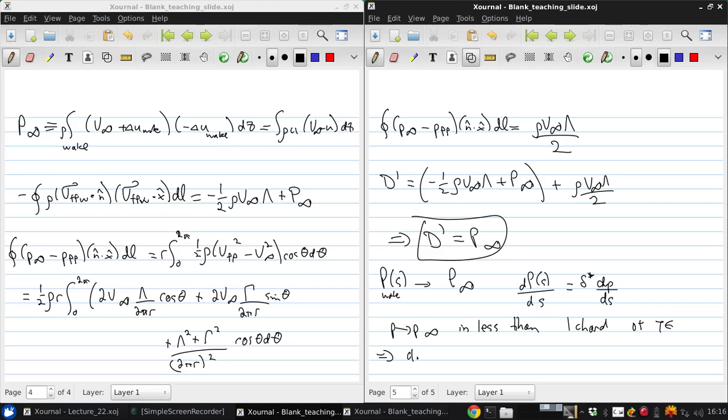So then that means that dp ds is zero once p is p infinity, and then P must be P infinity no matter how delta star is changing. So it doesn't matter how much the wake is spreading out and delta star is getting larger. Once dp ds is zero because the pressure is no longer changing, there's no more mechanism to change the momentum defect and it's reached the far field value giving the drag for the airfoil.